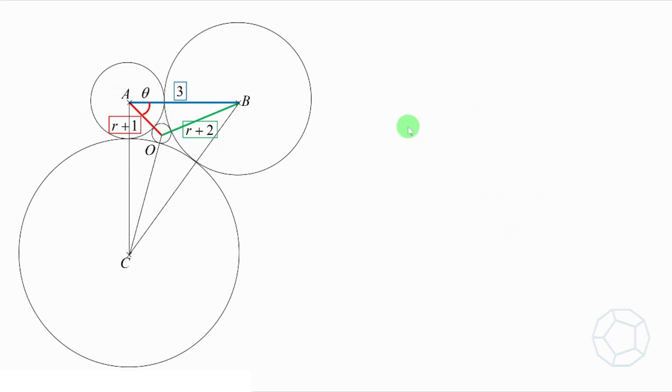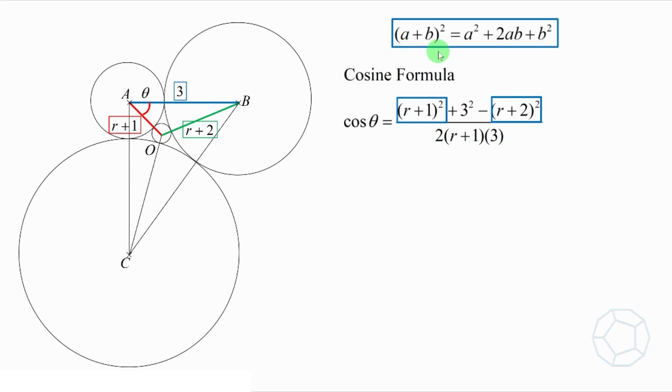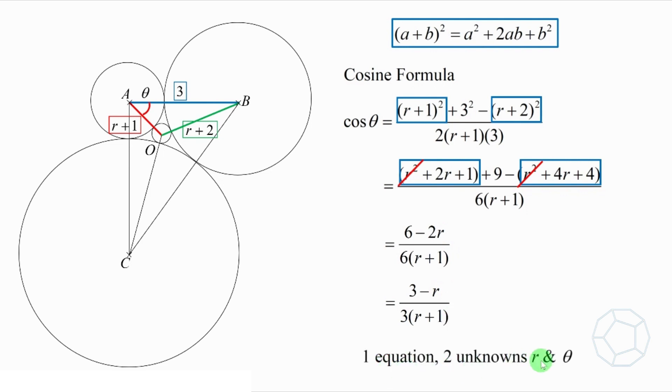Yes, apply the cosine formula. Cosine theta is equal to R plus 1 whole square plus 3 square minus R plus 2 whole square all over 2 times R plus 1 times 3. Expand the two perfect square terms in the numerator by the identity A plus B whole square is equal to A square plus 2AB plus B square. Then, we get this. Cancel out the R square term and simplify, we have 6 minus 2R over 6 times R plus 1, which is simplified to 3 minus R over 3 times R plus 1. Here, we have one equation and two unknowns R and theta. It's not enough for us to continue. What should we do?